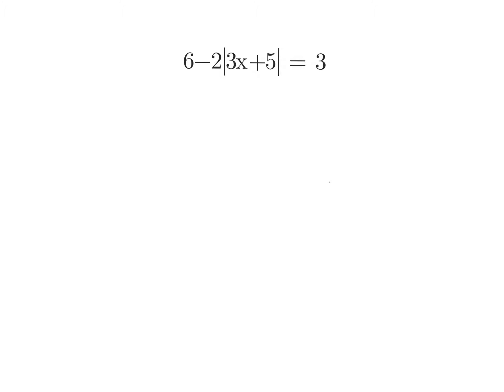That means you have two operations that exist outside of those absolute value bars. The most powerful one is multiplication — everybody see the 2 in front? That 2 in front of this absolute value bar is a multiplier. And you see that 6? That little thing right there is a subtraction symbol. So 6 is separated away from the absolute value by a subtraction sign.